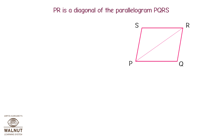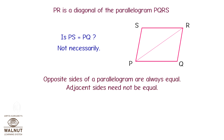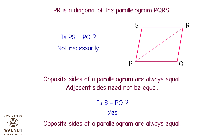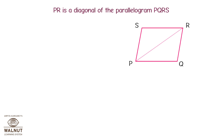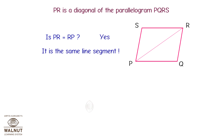PR is a diagonal of parallelogram PQRS. Is PS equal to PQ? Not necessarily — adjacent sides need not be equal. Is SR equal to PQ? Yes, because opposite sides of a parallelogram are always equal. Is PR equal to RP? Yes, it is the same line segment.